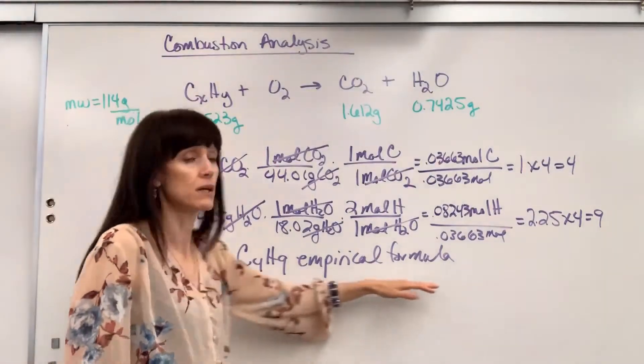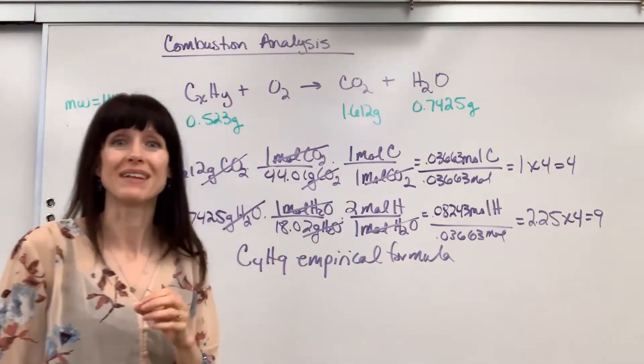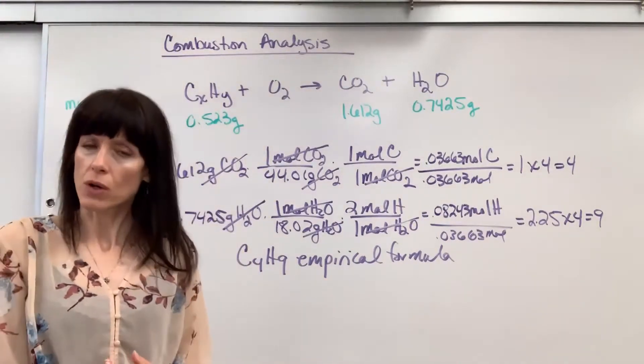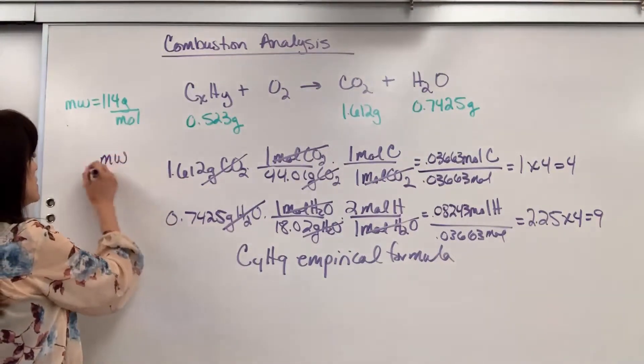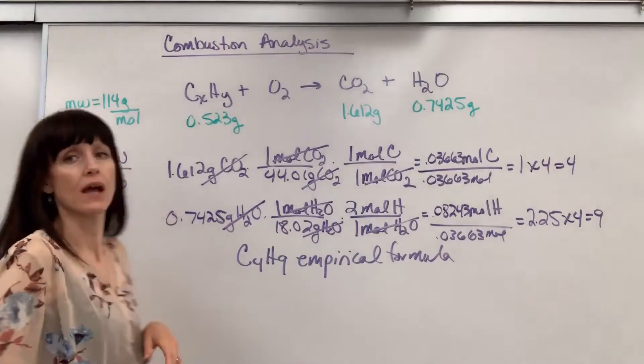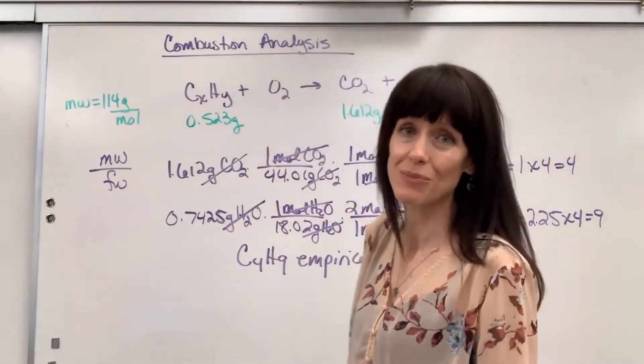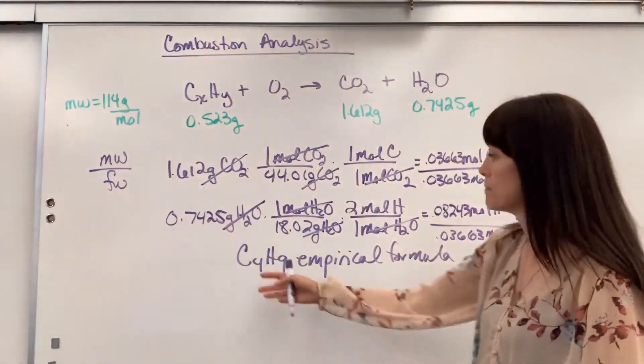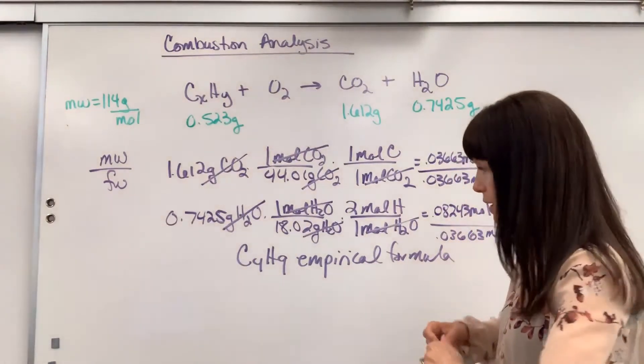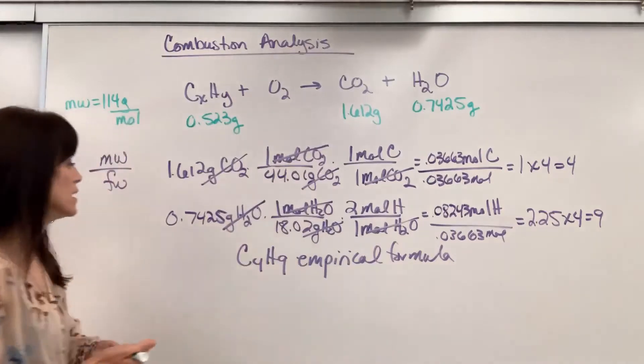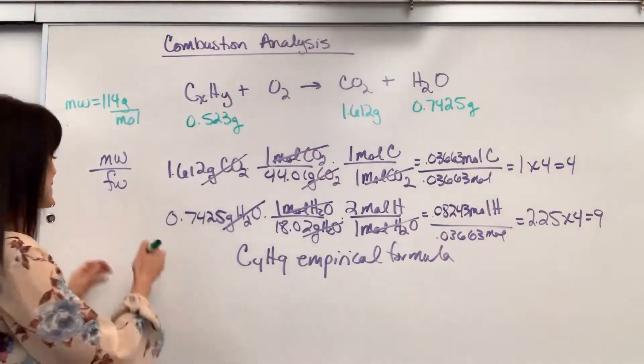So we found empirical formula. Now let's do molecular formula. You'll recall molecular formula, we're going to take the molecular weight divided by the formula weight. The formula weight is just the molar mass of the empirical formula. Here I have it, C4H9. Let's find the molar mass of this.